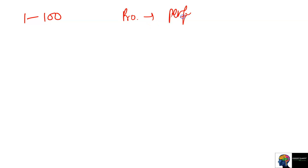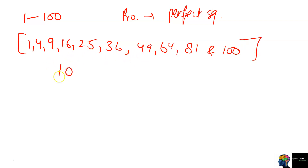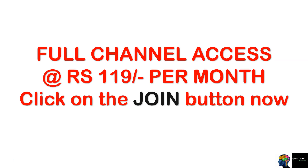Find the probability of drawing a perfect square number from cards numbered 1 to 100. The perfect squares between 1 and 100 are: 1, 4, 9, 16, 25, 36, 49, 64, 81, and 100 — because 100 is included. These are the numbers whose square root gives a whole number. How many are there? 10. So the probability is 10 by 100, which equals 1 by 10. With this, our probability concept is complete. If you have any doubts, comment below. Thank you for watching, and please get the full channel access.